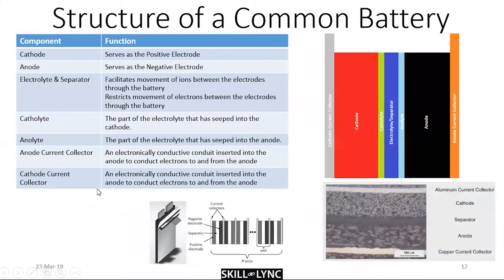Next, we're going to talk about the structure of a typical lithium-ion battery. There is a cathode — the positive electrode in galvanic mode — and an anode, the negative electrode in galvanic mode. There is the electrolyte and separator combination. The electrolyte facilitates movement of ions through the battery, while electrons travel through the external circuit. The separator ensures electrons only travel through the external circuit while allowing ions through the internal circuit.